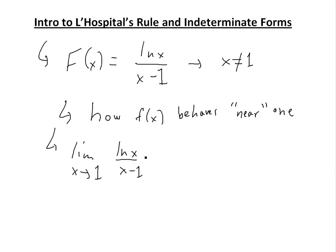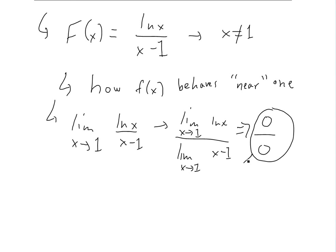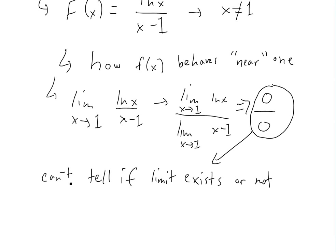If you put ln(x) in here, it approaches 0. So the limit as x approaches 1 of ln(x) approaches 0, and the limit of x - 1 also approaches 0. You've seen my other video on logarithms and natural log. So you're going to have something like 0 over 0, and we can't tell if this one has a limit or not. We call these indeterminate forms.